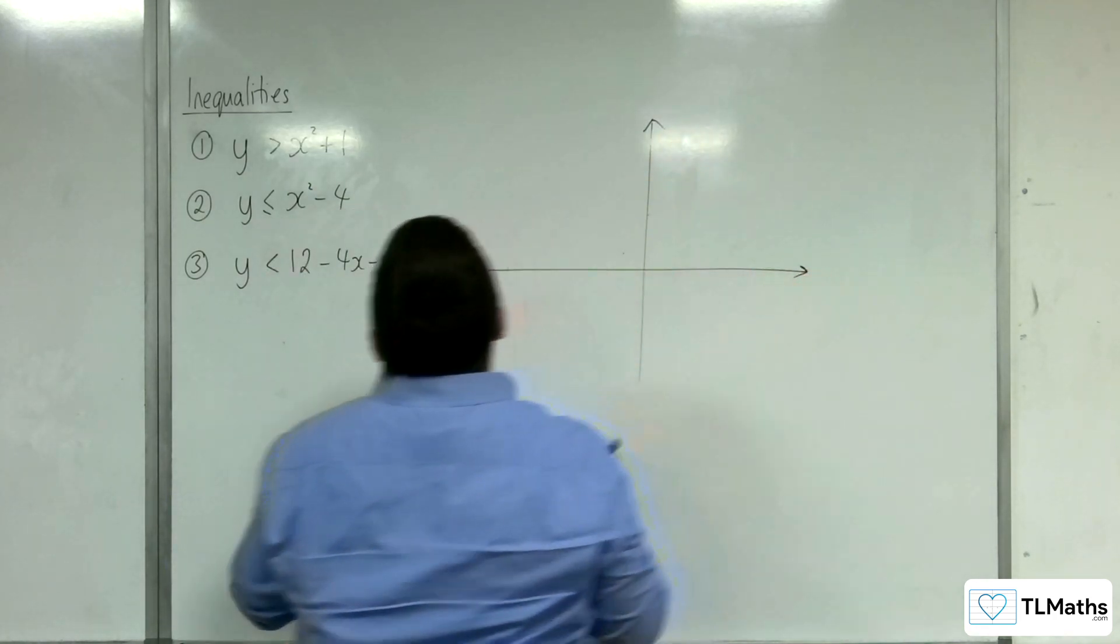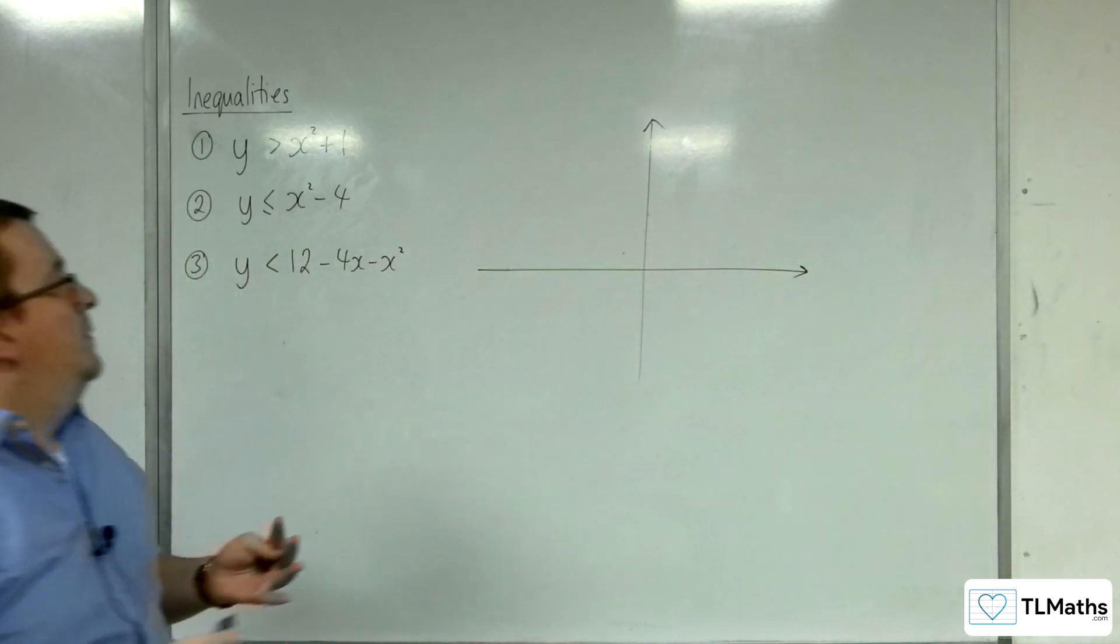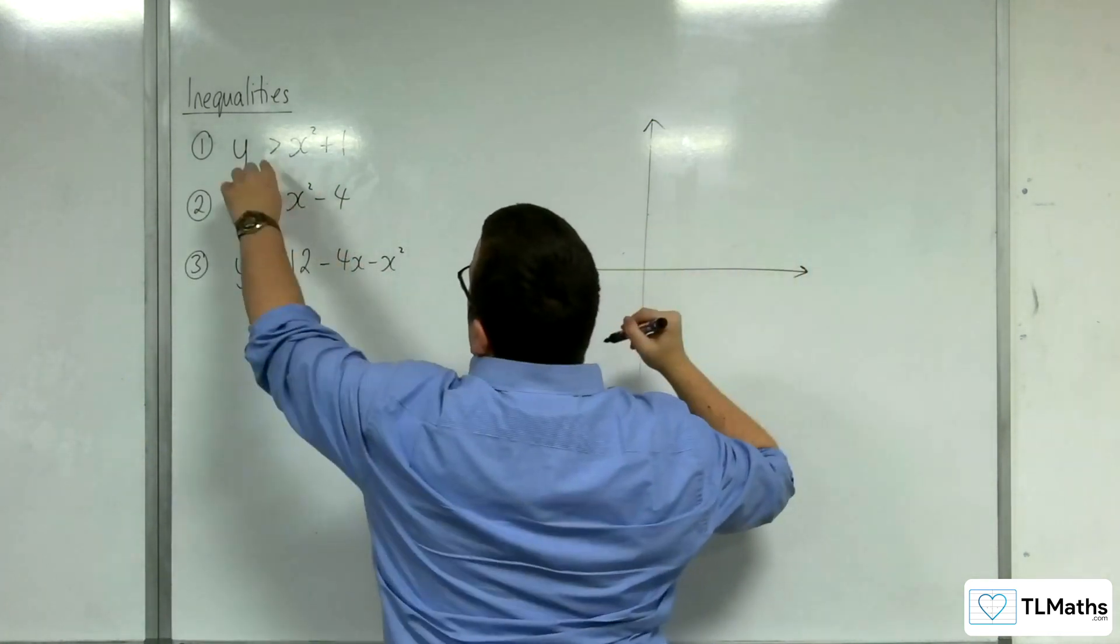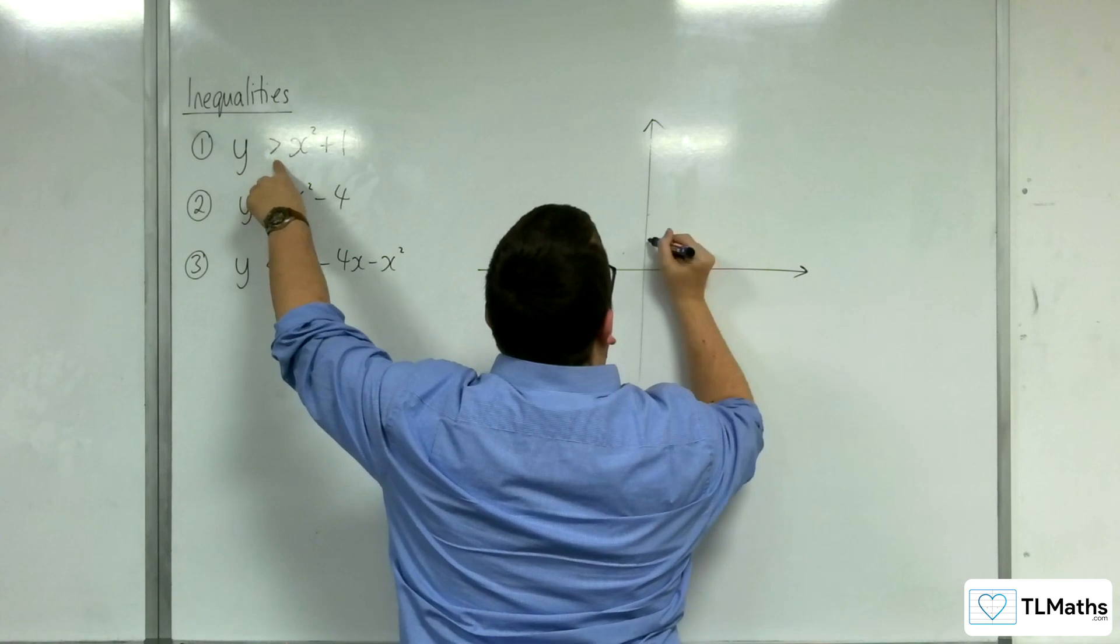Okay, so y equals x squared plus one would just look like this. Okay, now we need to have it as a dotted line because we've got a greater than, strictly greater than.